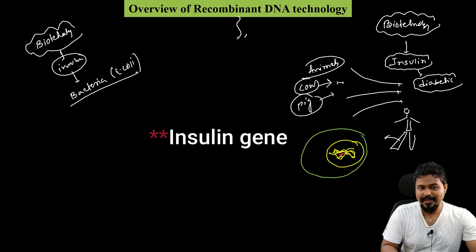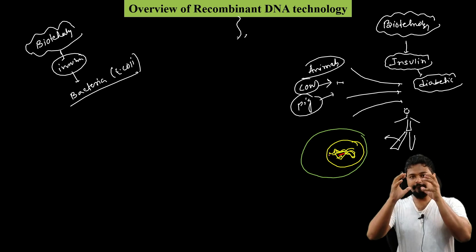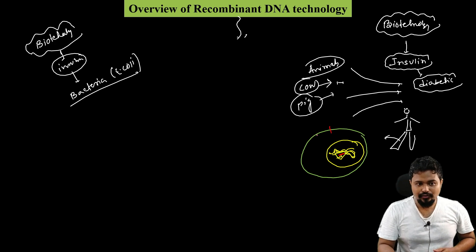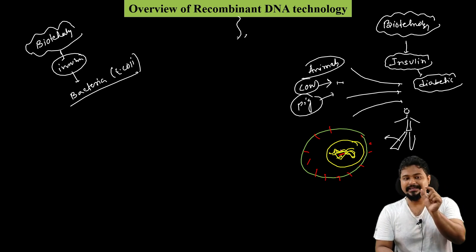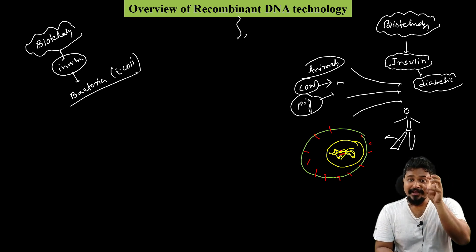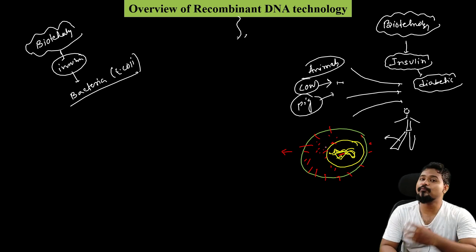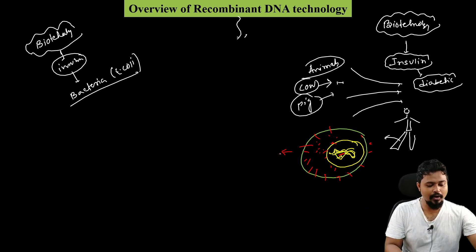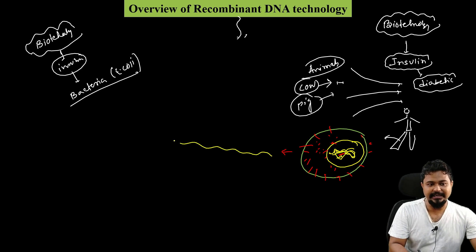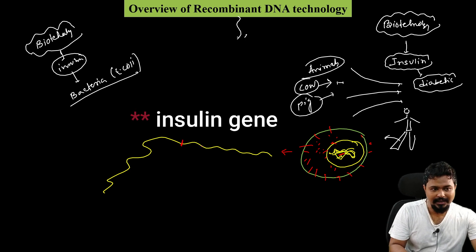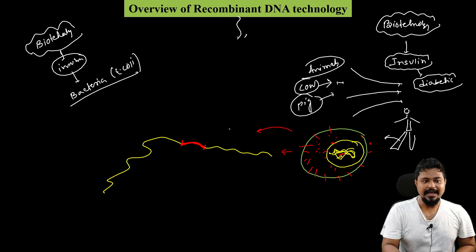So, a human cell contains the insulin hormone gene in its DNA. The first and foremost process is extraction — we extract the DNA from the nucleus. The DNA contains the insulin gene we need.